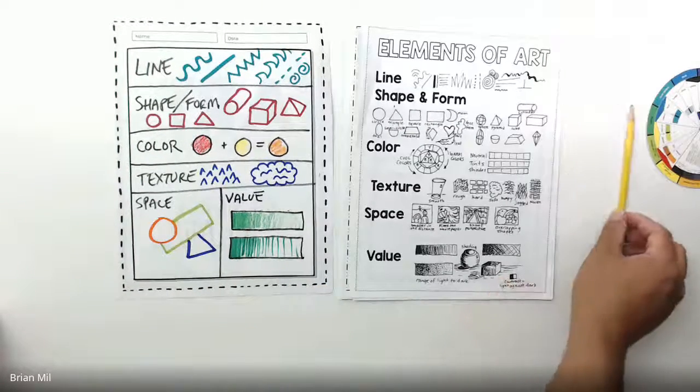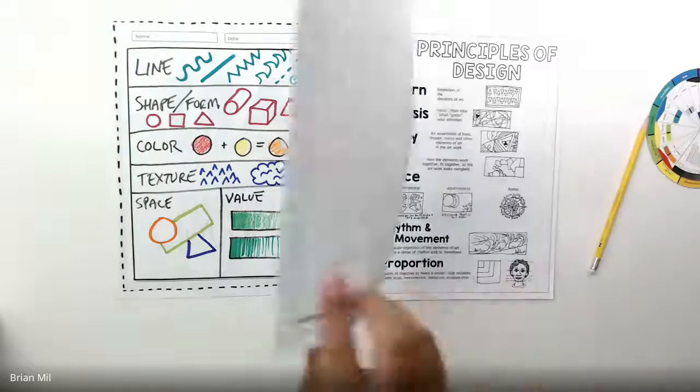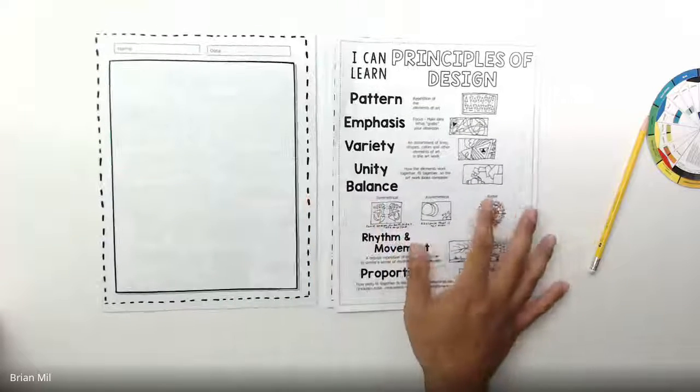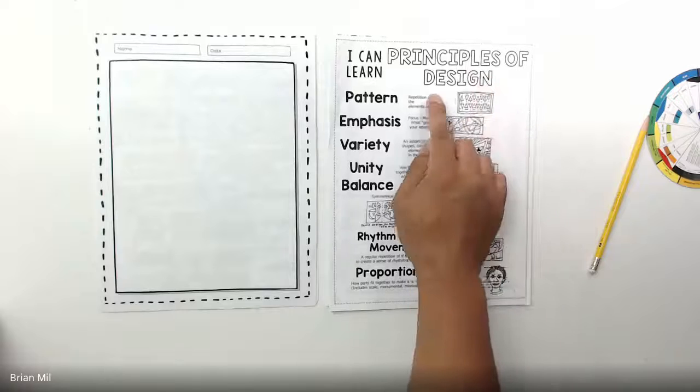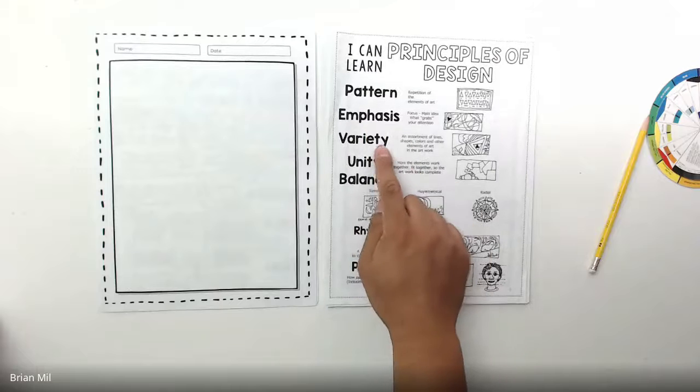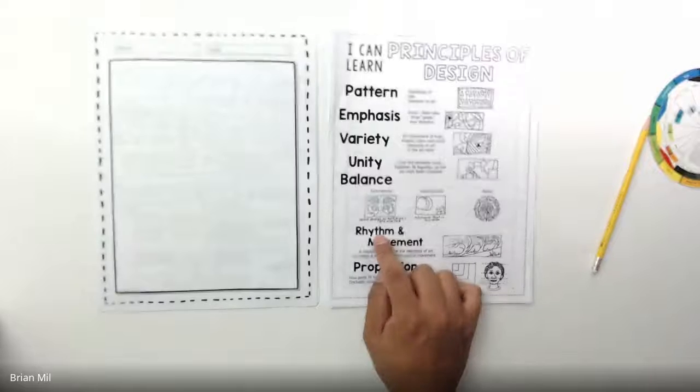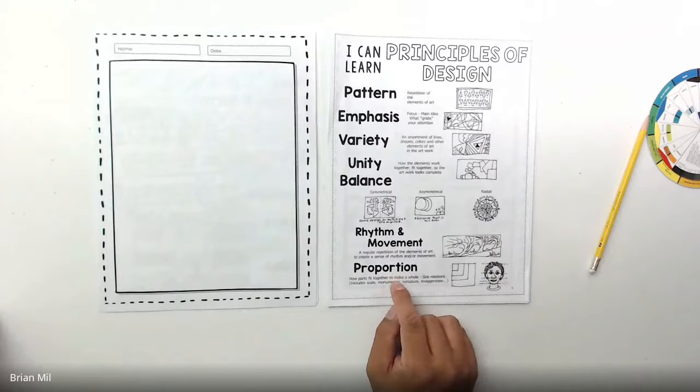I only have about four minutes left. So what I'm going to do, I'm just going to go over the next part real quick. I don't want you guys to fall behind versus the other class. The other class where I did this as well. Okay. So here we go. Principles of Design. The principles of design are pattern, emphasis, variety, unity, balance, rhythm and movement, and proportion. I want to talk about each and every one of these.